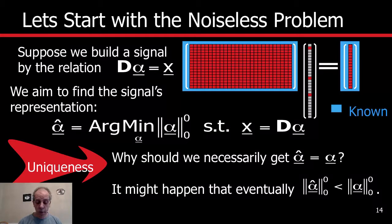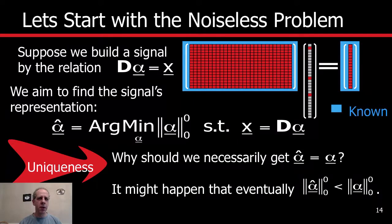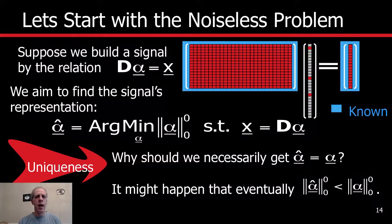So these two problems depend a lot on the dictionary — its size K and its general structure. The basic idea, as we've seen from these examples, is that we want the dictionary D to have atoms that are as uncorrelated as possible, to guarantee unique solutions and that we get back the sparsest representation that actually produced the signal. Depending on the sparsity level and conditions on the dictionary, there are beautiful theoretical results that guarantee uniqueness.